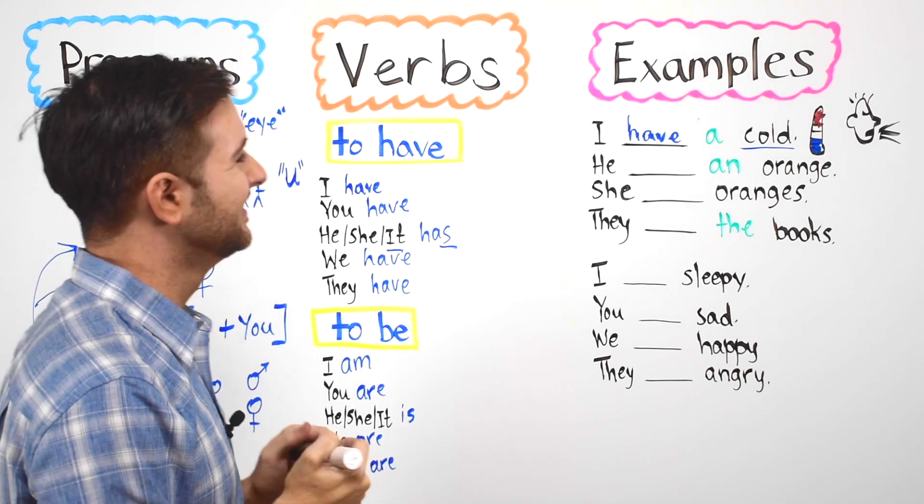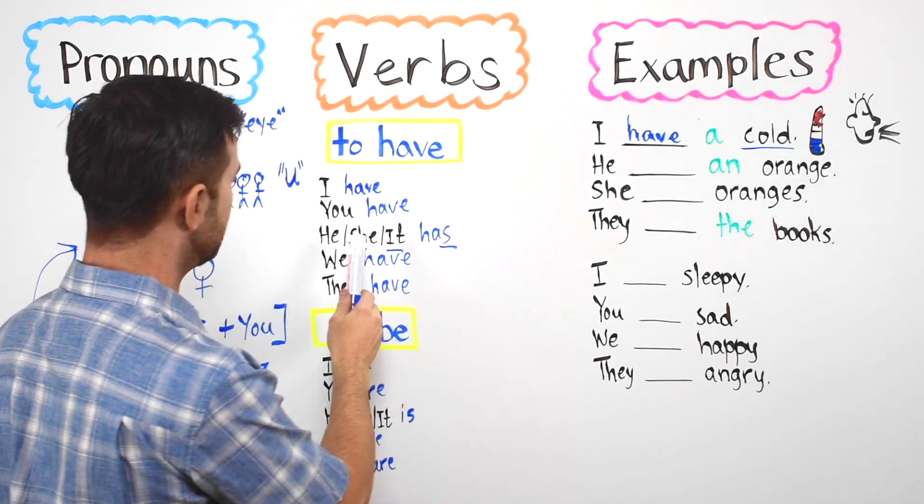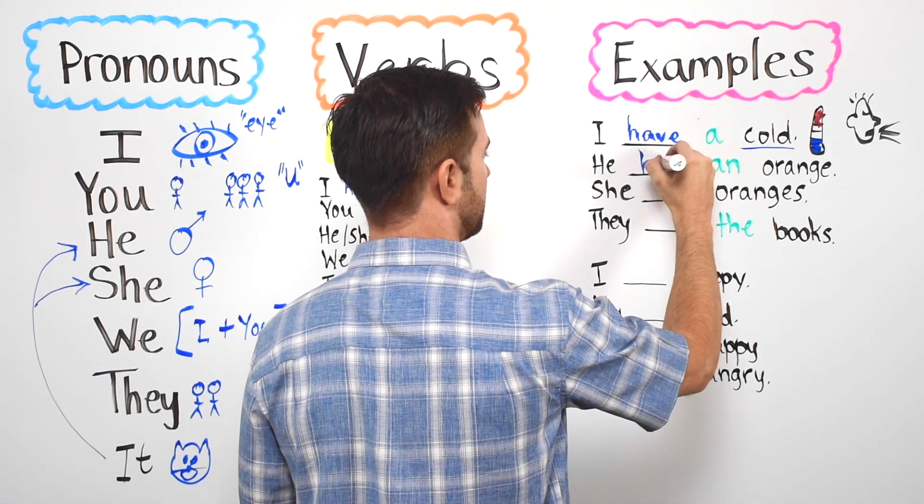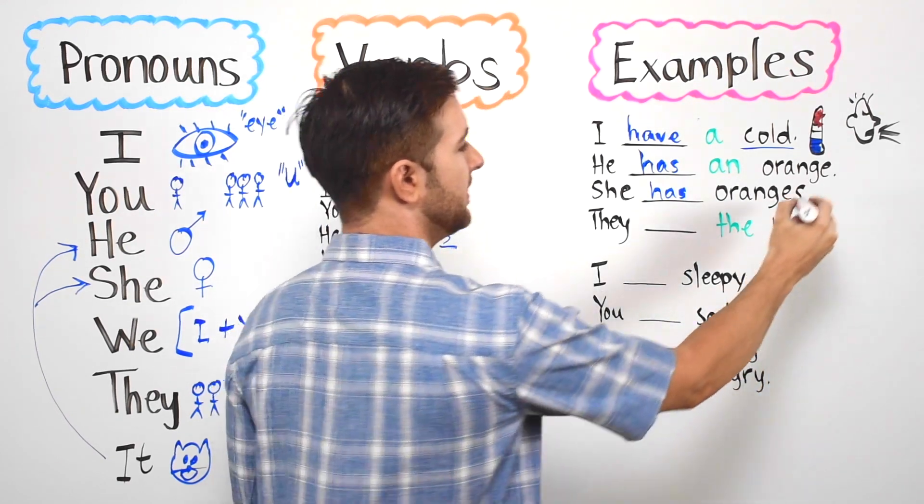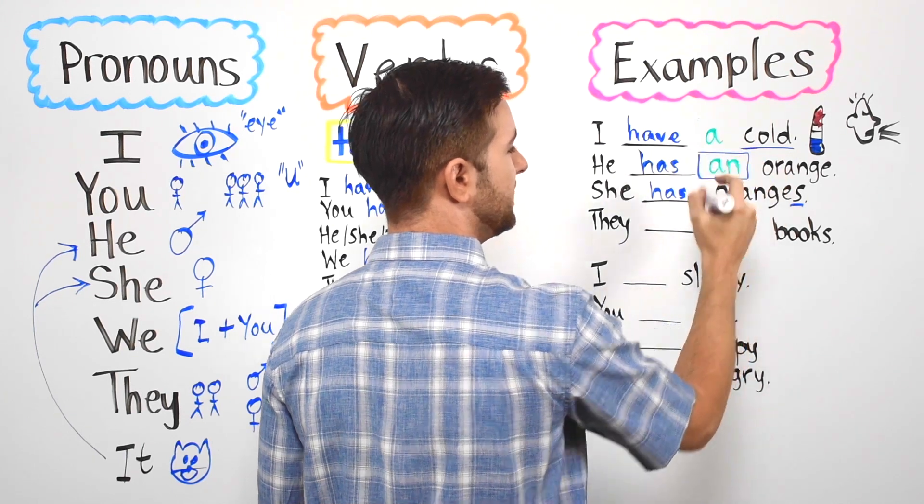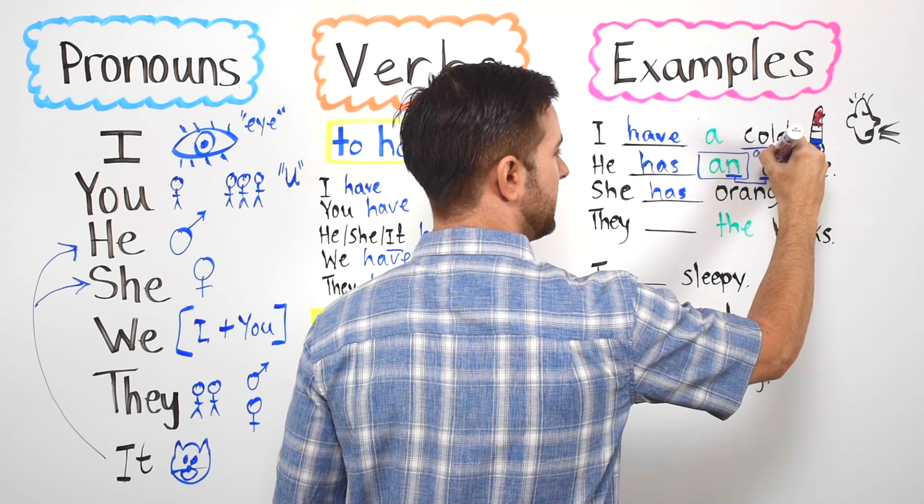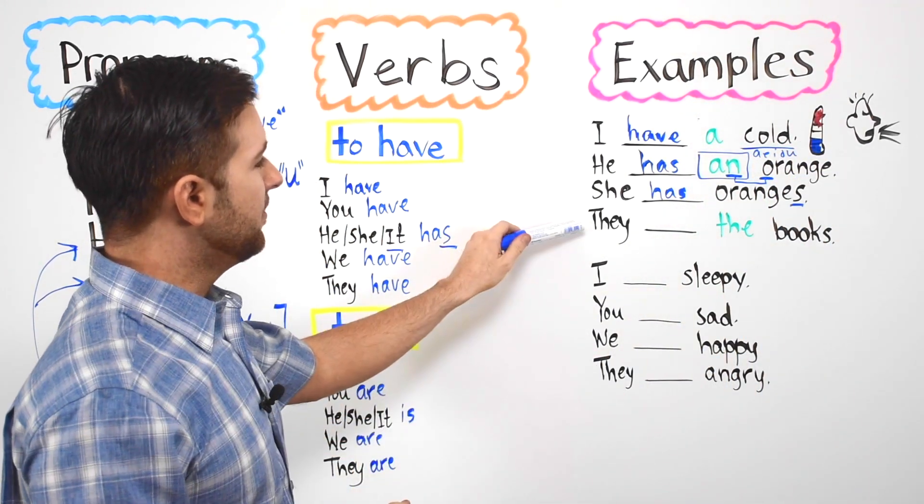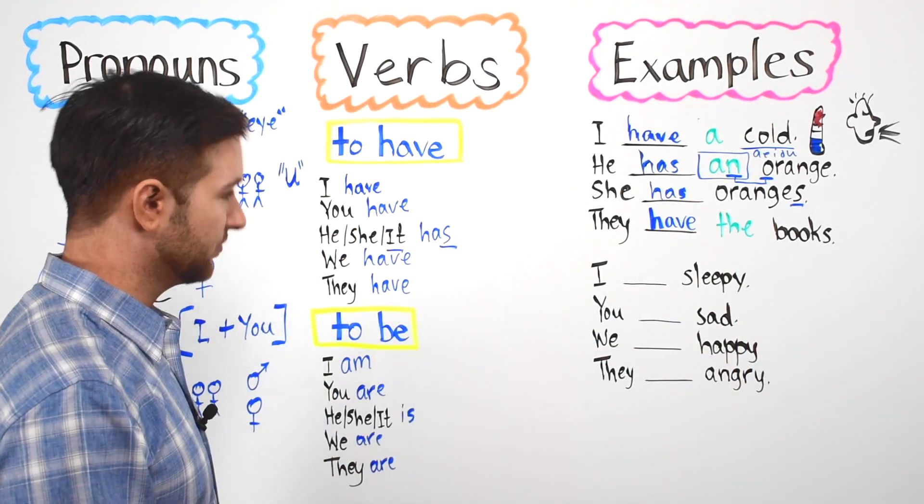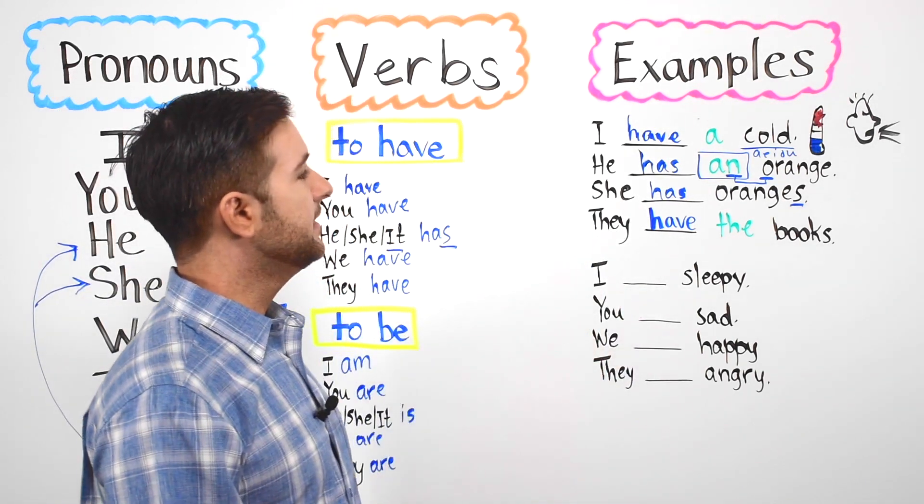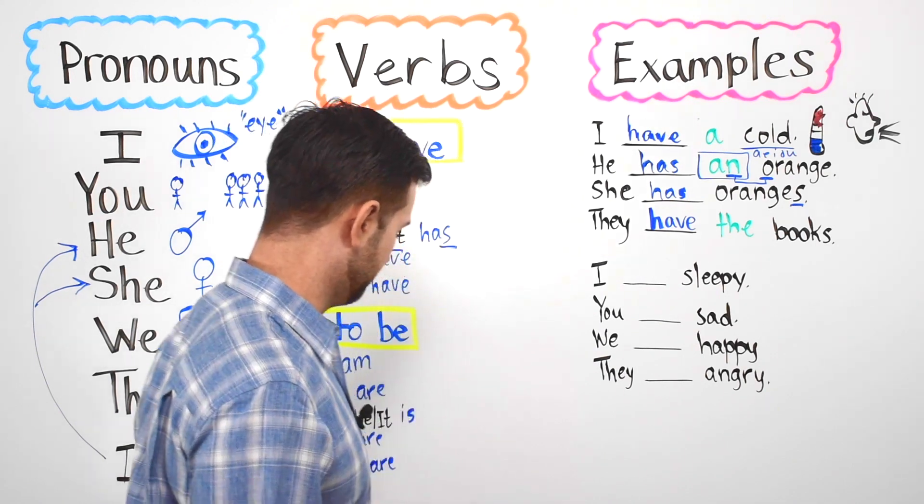Next we have he blank an orange. What can we say? He has an orange. She has oranges. Notice we have an S, it's plural here. We don't have an S here but we have an which is an indefinite article and we use an because this is an O. Remember we do this with A E I O and U. Then we have they have the books.